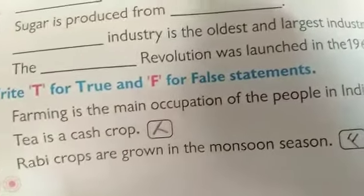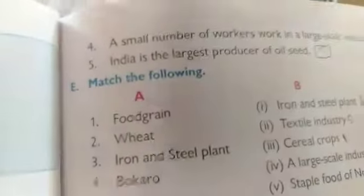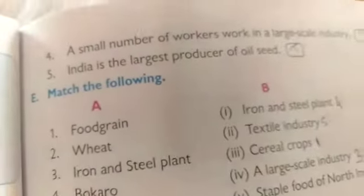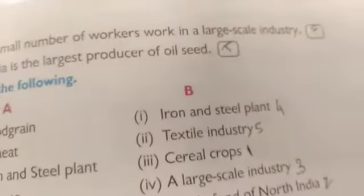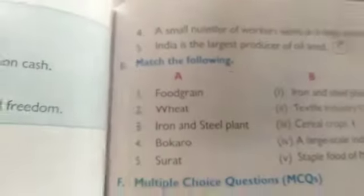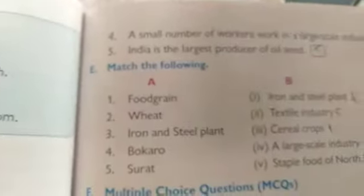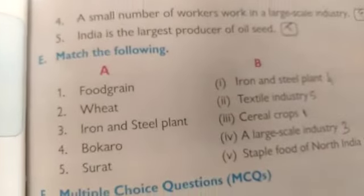Rabi crops are grown in the monsoon season — it's false. A small number of workers work in large scale industries — it's false. India is the largest producer of oil seeds — it's true.